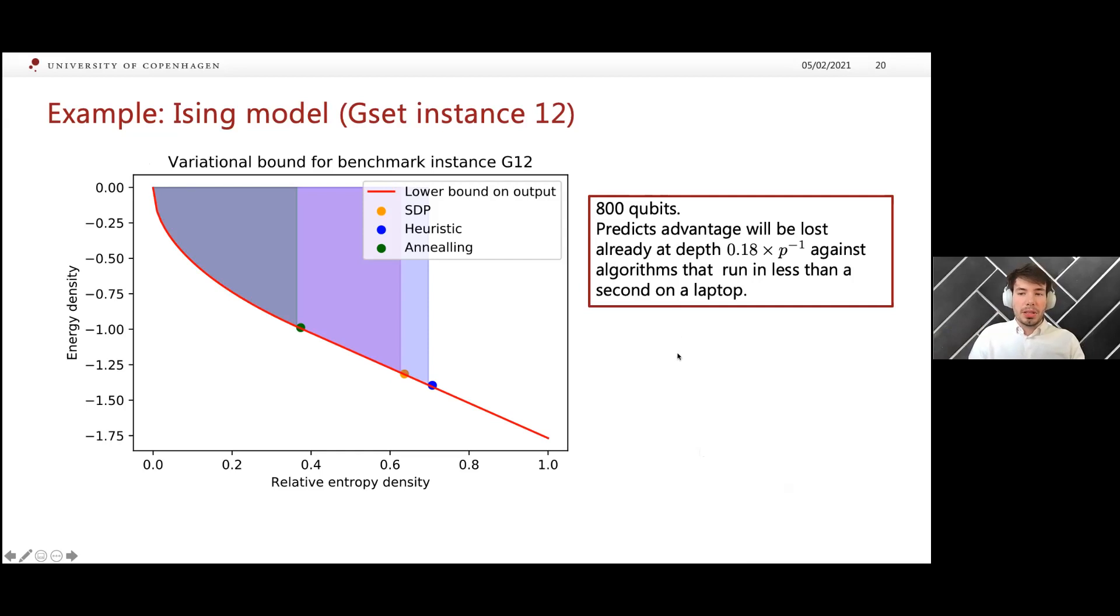The point here is that we have 800 qubits, maybe would require 800 qubits to solve this with QAOA. If you would compare, for instance, to the expected energy from SDP methods, you will already lose advantage at 0.18 times P to the minus one. This is really an algorithm that you can run in less than a second on a laptop with current SDP solvers. This shows that if there are good classical algorithms available, the number of errors you can tolerate is not that high, and still expect a quantum speedup.